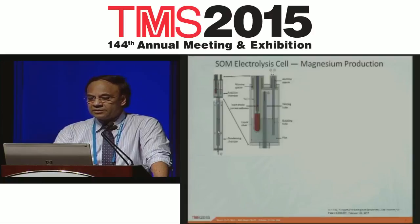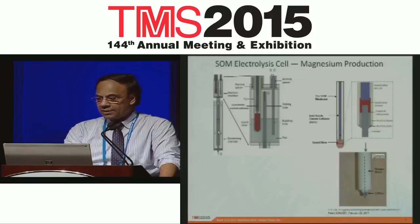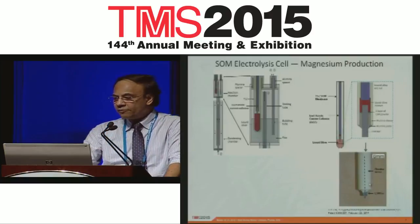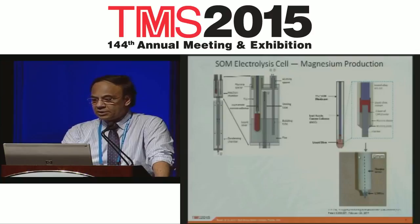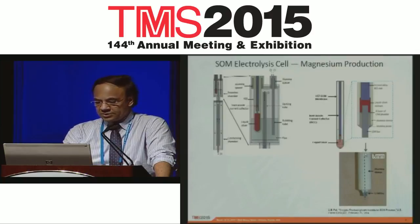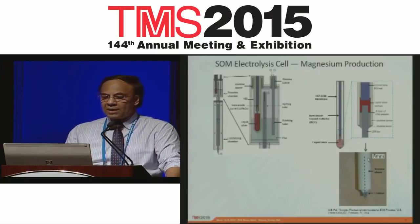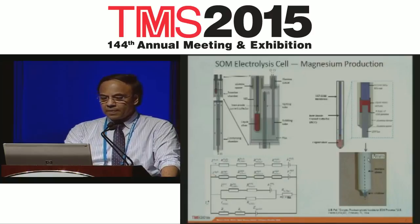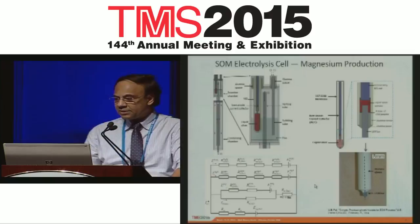Here is the inert anode current collector — you can see the actual physical picture shown here; it is quite robust. To analyze the process, we can use an equivalent circuit, which I'm going to discuss in the next slide.